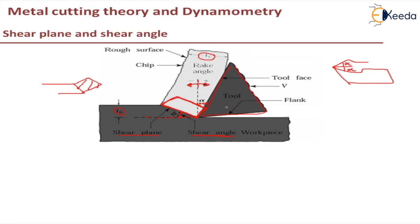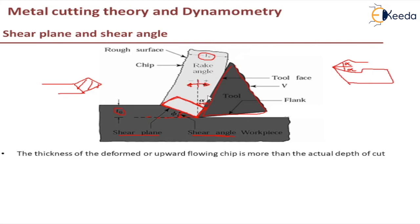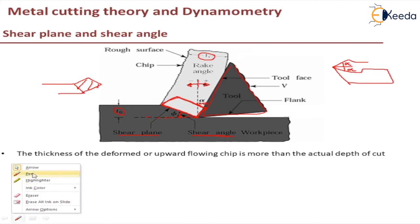Now let us discuss chip thickness ratio. The thickness of the deformed or upward-flowing chip is more than the actual depth of cut, so T-c will be greater than T-naught.